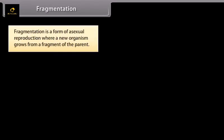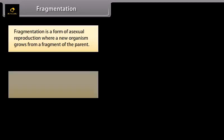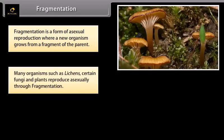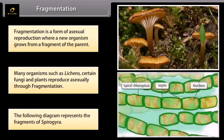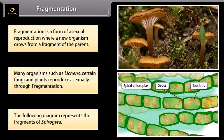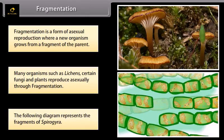Fragmentation is a form of asexual reproduction where a new organism grows from a fragment of the parent. Many organisms such as lichens, certain fungi, and plants reproduce asexually through fragmentation. The following diagram represents the fragments of Spirogyra.